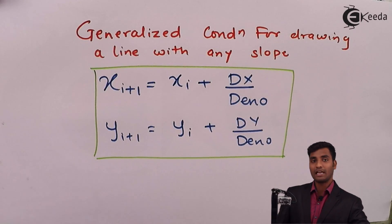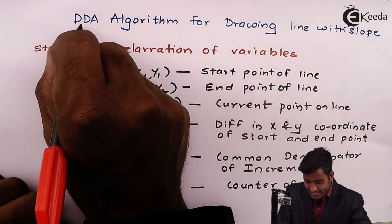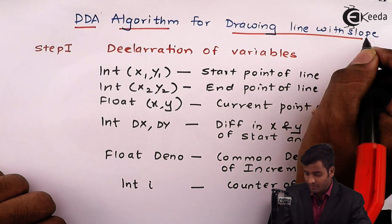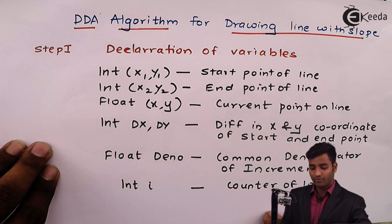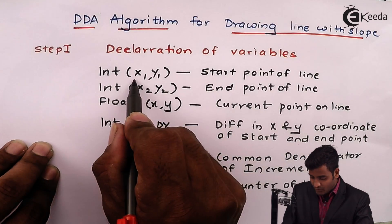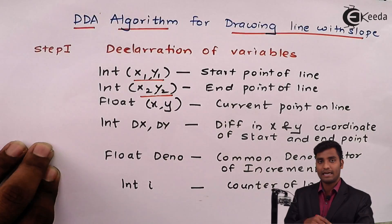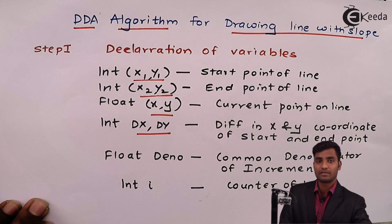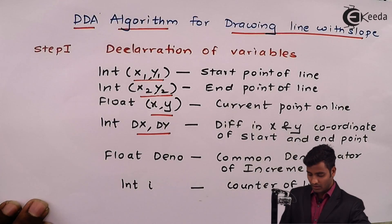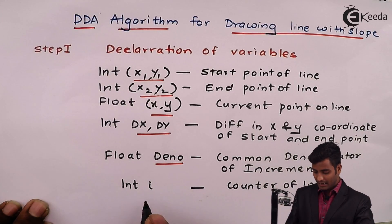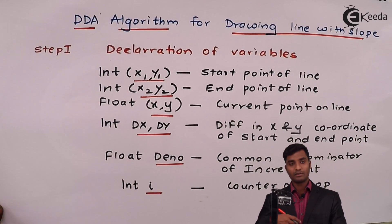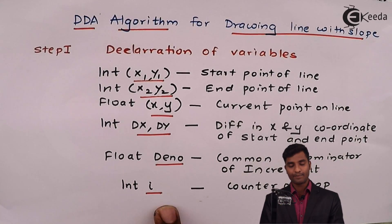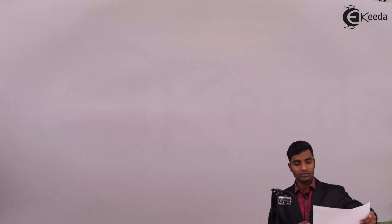Now we will write the DDA algorithm for drawing a line with any slope. Step 1 is declaration of variables: x1, y1 is the starting point; x2, y2 is the end point; float x, y is the current point; dx and dy are the differences in x and y coordinate values; float denominator is the common denominator of increment; and i is the loop counter.